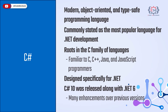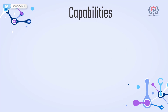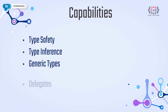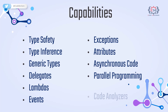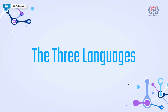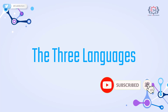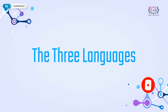The capabilities of each language vary, but most .NET languages provide type safety, type inference, generic types, delegates, lambdas, events, exceptions, attributes, asynchronous code, parallel programming and code analyzers, to name a few. The three languages are interoperable, meaning they are compatible and can coexist in a single application — one of the key features of .NET, allowing you to reuse your skills, code and favorite libraries. As long as a language can generate intermediate language or IL, you can write your own language that runs in .NET.